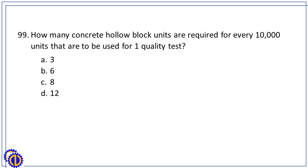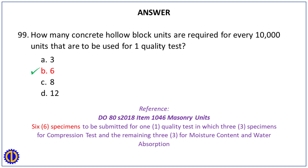Question 99. How many concrete hollow block units are required for every 10,000 units for one quality test? A. 3. B. 6. C. 8. D. 12. Answer: B. 6. Reference: D-080S-2018, Item 1046 Masonry Units — 6 specimens to be submitted for one quality test: 3 specimens for compression test and 3 for moisture content and water absorption.